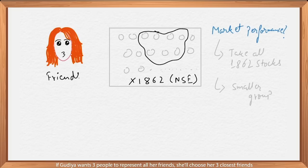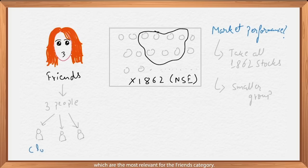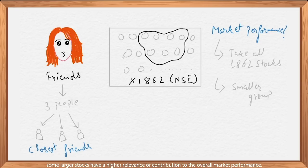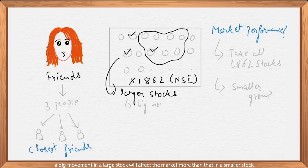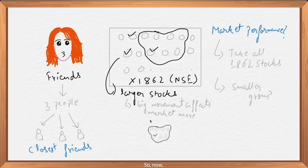If Gudiya wants three people to represent all her friends, she'll choose her three closest friends, which are the most relevant for the friends category. Similarly, in the stock market, some larger stocks have a higher relevance or contribution to the overall market performance. Typically, these would be the larger stocks. A big movement in a large stock will affect the market more than that in a smaller stock, since more money is invested in the larger stock.